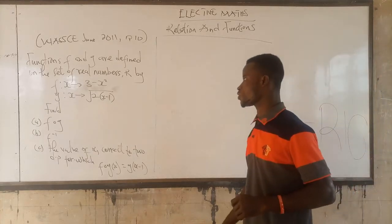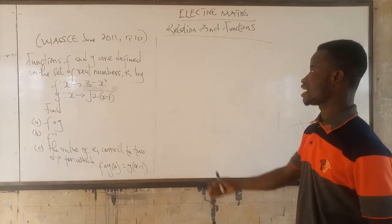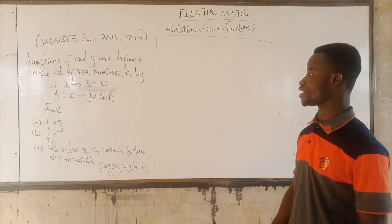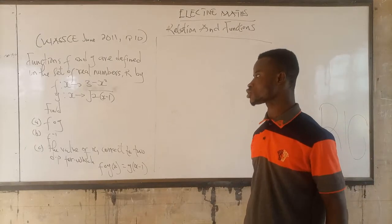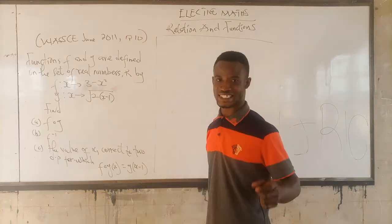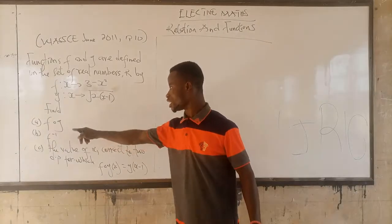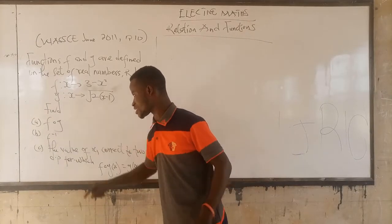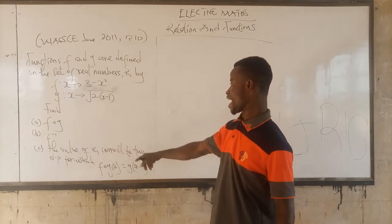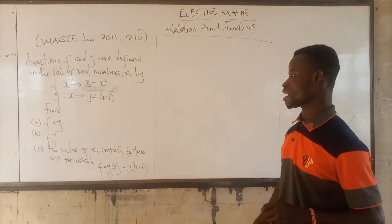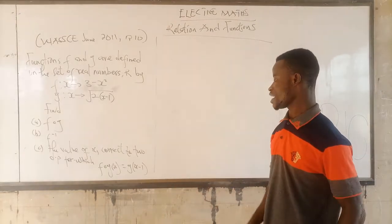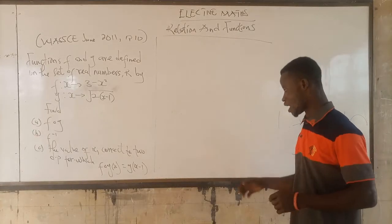This question is on composite functions. Functions f and g are defined on the set of real numbers by f(x) = 3 minus x squared, and g(x) = square root of (2x minus 1). We need to find: (a) fog, (b) f inverse, and (c) the value of x correct to 2 decimal places for which fog equals g(x minus 1).